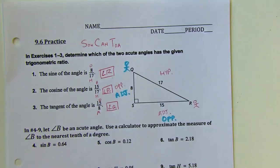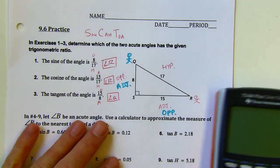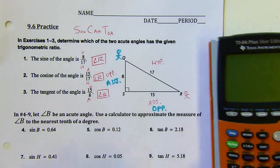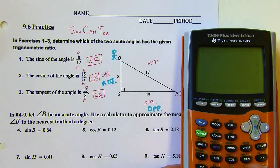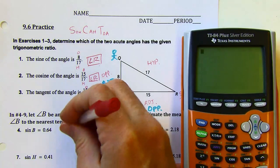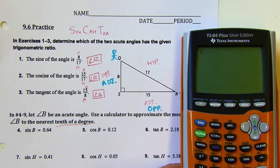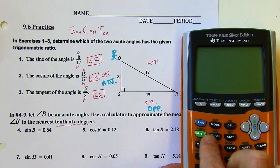And that's the first set. This next group of problems, you're going to need a scientific calculator — you'll need those sine, tangent, and cosine keys. This also says we're going to answer to the nearest tenth of a degree, so we're using degree mode. Your calculator needs to be in degree mode.